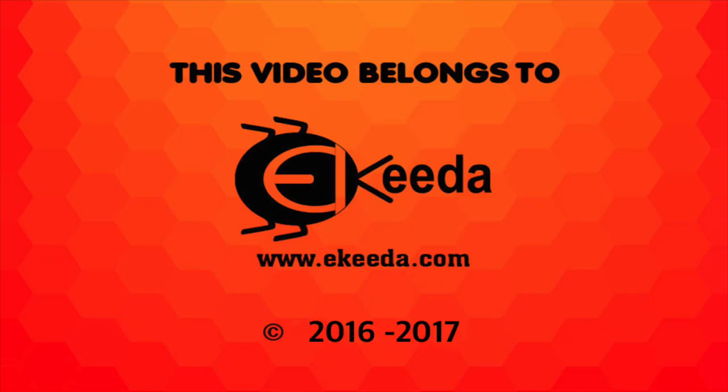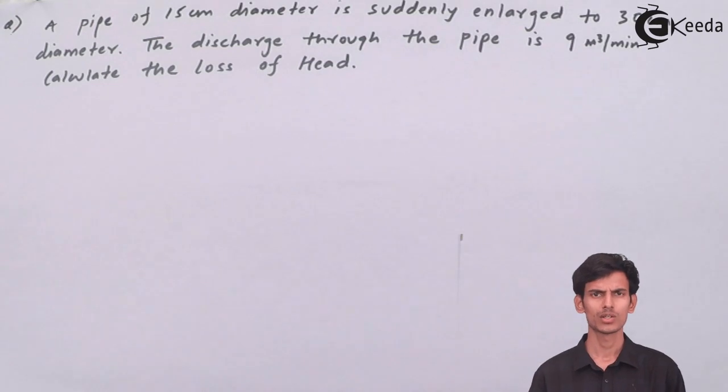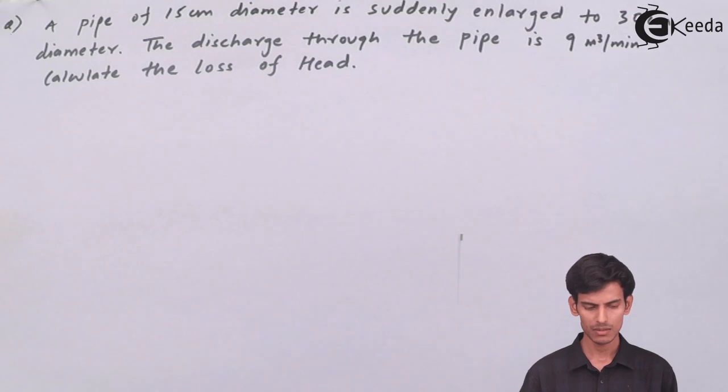This is the first question. A pipe of 15 centimeter diameter is suddenly enlarged to 30 centimeter diameter. The discharge through the pipe is 9 meter cube per minute. Calculate the loss of head. So let's solve this question.